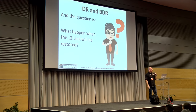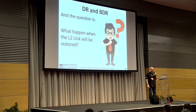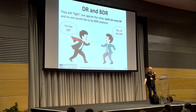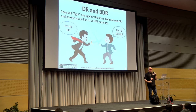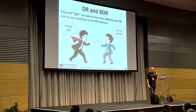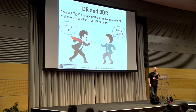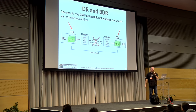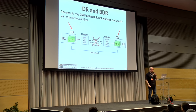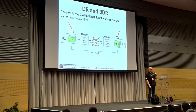The question is: what happens when the layer 2 link is restored? It's amazing — they start to fight each other, because both are now DR and neither wants to be BDR. The result is that the OSPF network stops working and usually requires a lot of time to recover. Usually the engineer has to reboot.